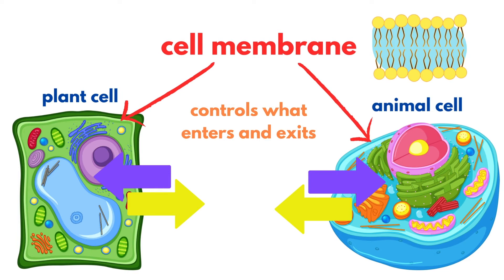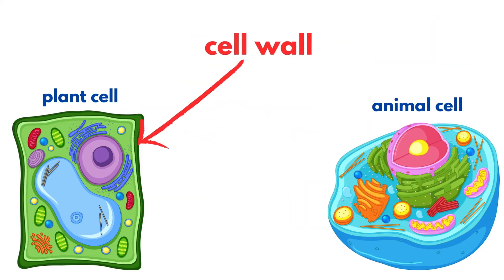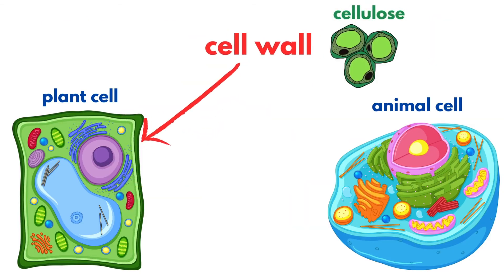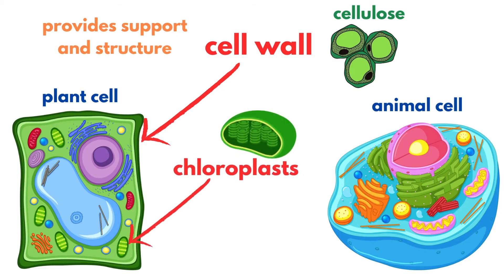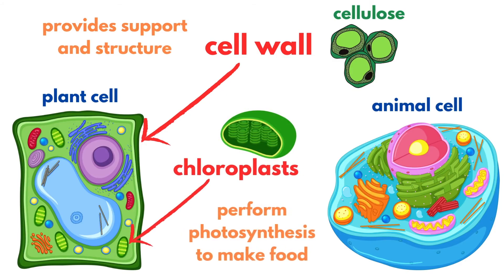Here's where plant cells start to differ. In addition to the cell membrane, plant cells have a rigid cell wall made of cellulose, which provides extra support and structure. Plus, they have chloroplasts, the green organelles responsible for photosynthesis, allowing plants to convert sunlight into food. These are features unique to plant cells.